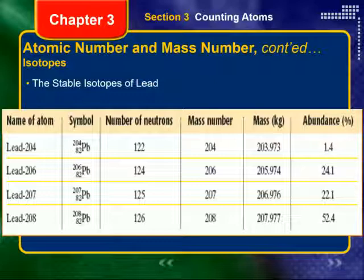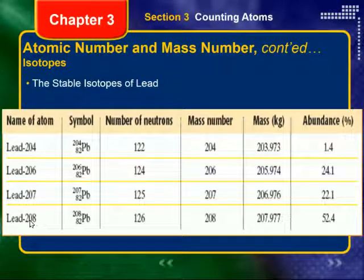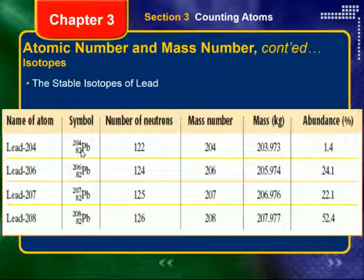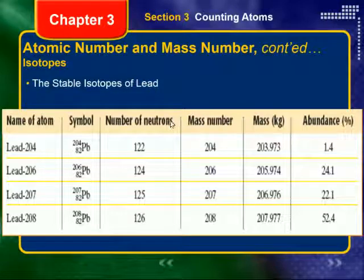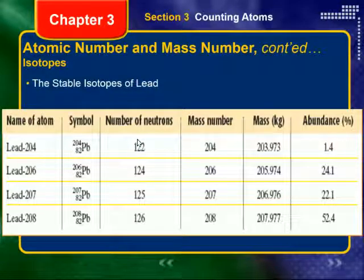You might wonder why there are varying numbers of neutrons — it has to do with stability. If we look at all the stable isotopes of lead, there are four: lead-204, lead-206, lead-207, and lead-208. The mass number varies, but the atomic number is always 82. What changes is the number of neutrons: 122, 124, 125, and 126. You might ask why there's no lead-205 — because it doesn't form a stable isotope. If it's not stable, it will decay until it finds a stable configuration.